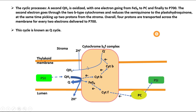In the cyclic process, a second QH2 is oxidized, with one electron going from the FeS protein to plastocyanin and finally to P700. The second electron goes through the two B-type cytochromes and reduces the semi-quinone to plastohydroquinone, picking up two protons from the stroma. Overall, four protons are transported across the membrane for every two electrons delivered to P700. This cycle is known as the Q-cycle.